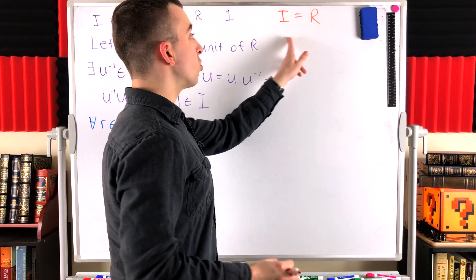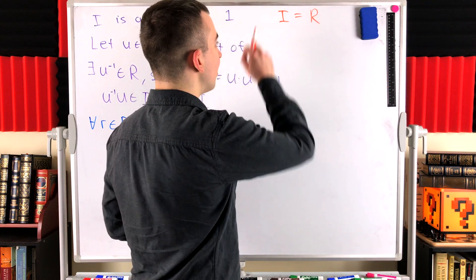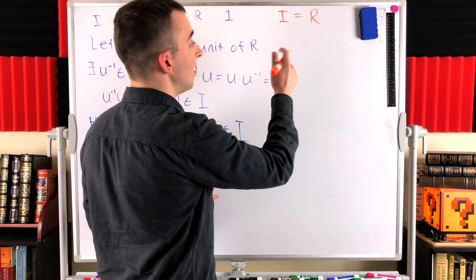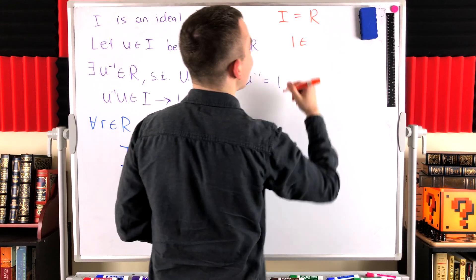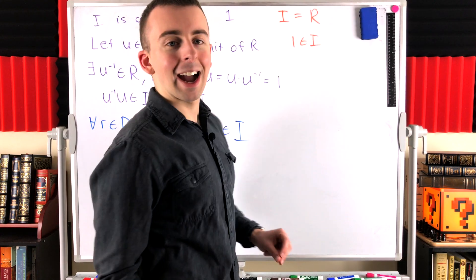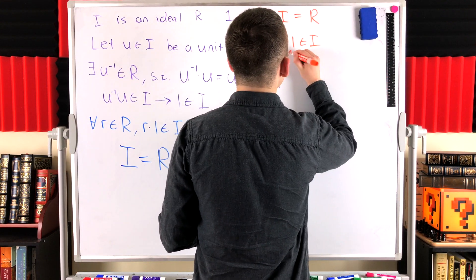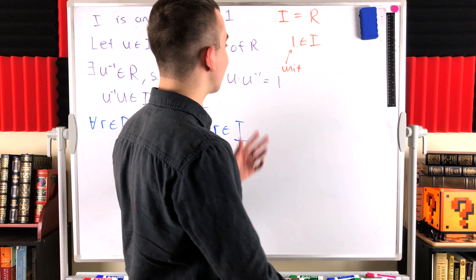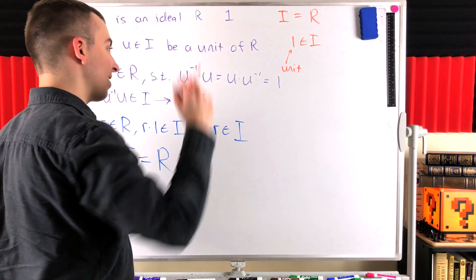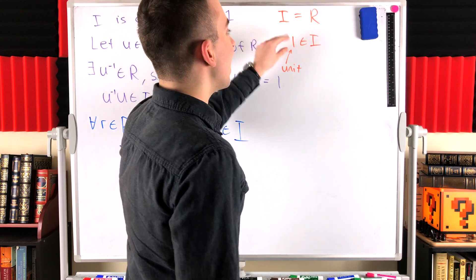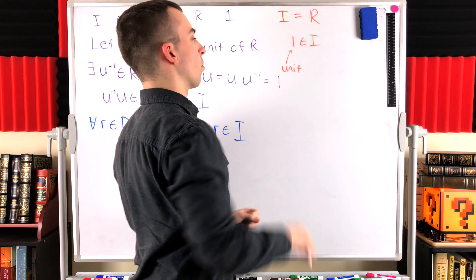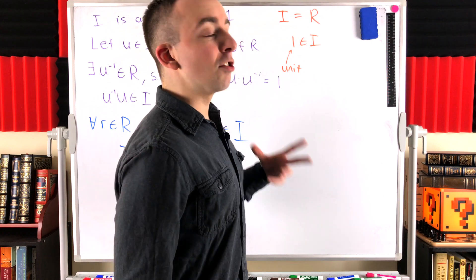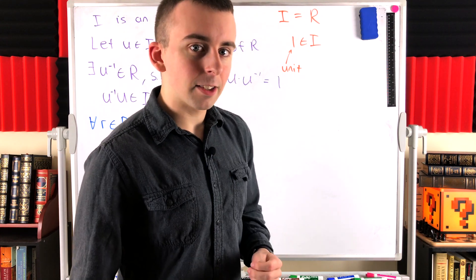We're practically done. We want to show that the ideal being equal to the ring forces the ideal to have a unit. Since the ring has a multiplicative identity and I is equal to the ring, this means the multiplicative identity 1 is an element of our ideal. Because what do we know about 1? It is a unit, because by definition it is its own multiplicative inverse, since it's the multiplicative identity. So we've just shown that if I is not a proper ideal and is thus equal to the ring, then it must have at least one unit. So if it has no units, then it is going to have to be a proper ideal.